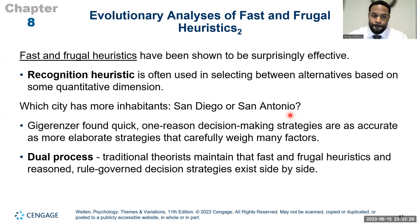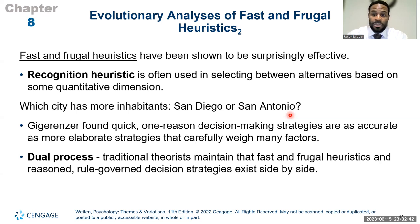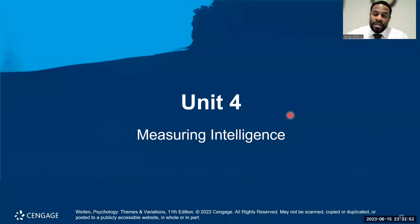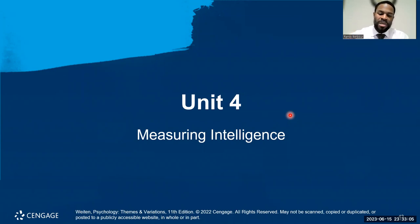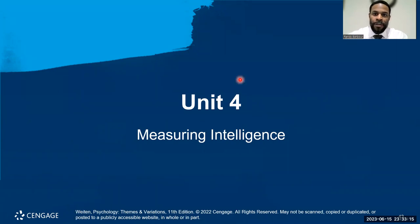The dual process theory says that fast, frugal heuristics and reasoned, rule-governed decisions exist side by side. If given enough information, we'll use it; if not, we use our best judgment. We'll stop here and pick up in part two of Chapter 8, where we'll talk about measuring intelligence, comparing intelligences, and what intelligence means to us as a human race.